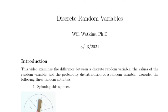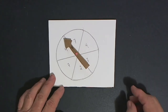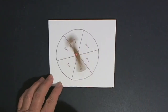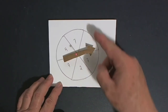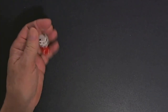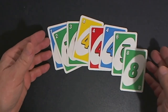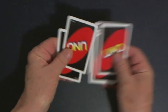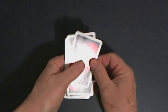In this video we're going to look at three related ideas: a discrete random variable, the values of the random variable, and the probability distribution of the random variable. We'll look at three random situations: this spinner, rolling two dice, and selecting a card at random from some subset of UNO cards.